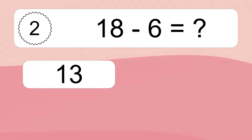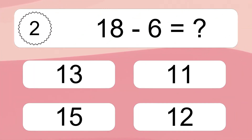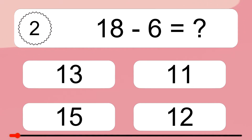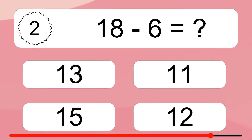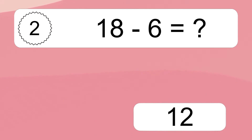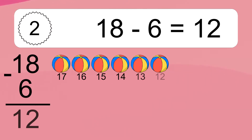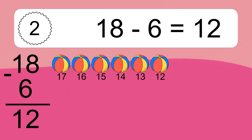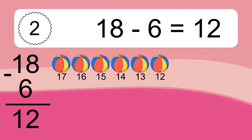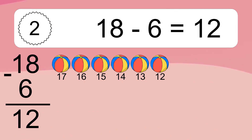18 minus 6 equals what? 18 minus 6 equals 12. Let's count it: 17, 16, 15, 14, 13, 12.